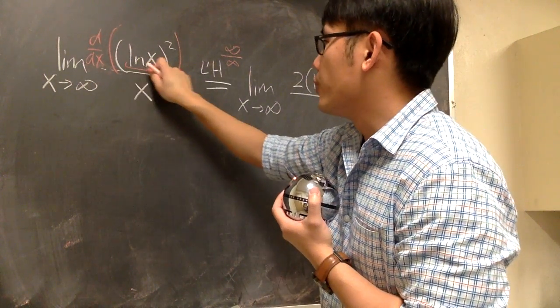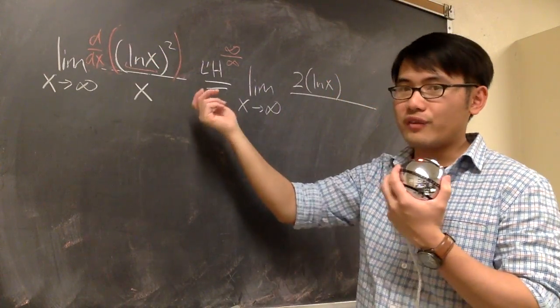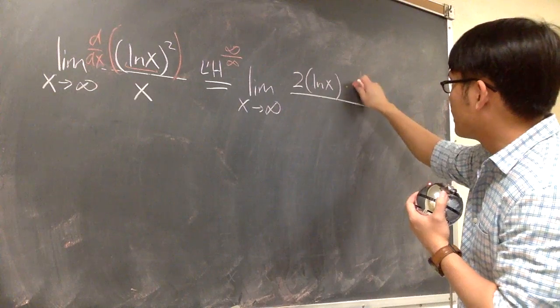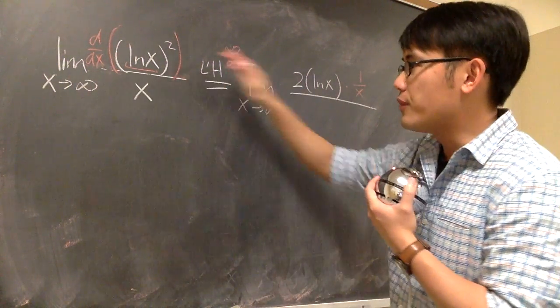By the chain rule, we look at the inside. The derivative of inside is, well, ln x is just 1 over x. So we multiply by 1 over x, because of the chain rule.